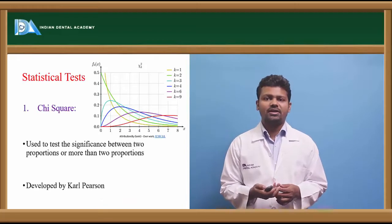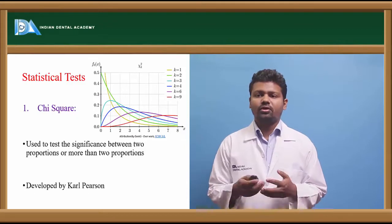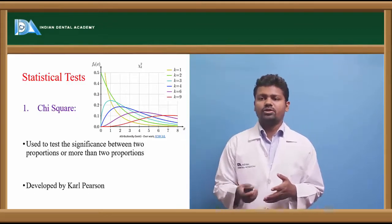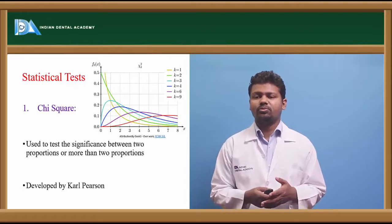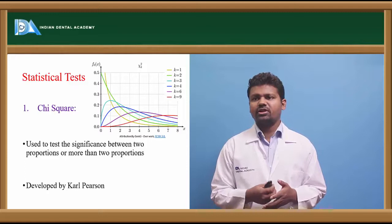Coming to statistical tests, the chi-square test is used to test the significance between more than two proportions. By using this test, the significance of each proportion can be known.